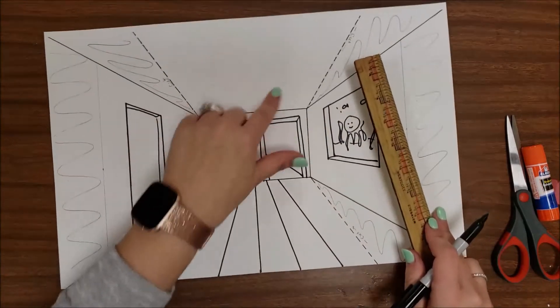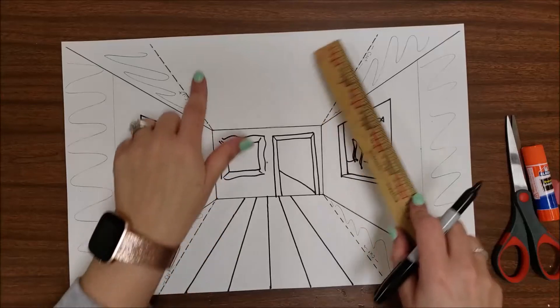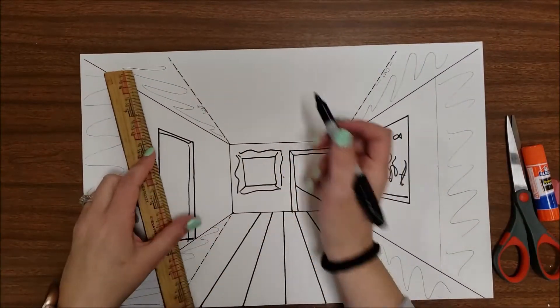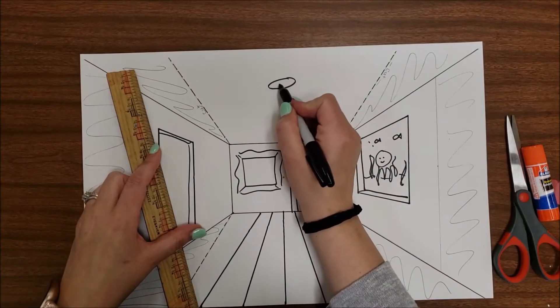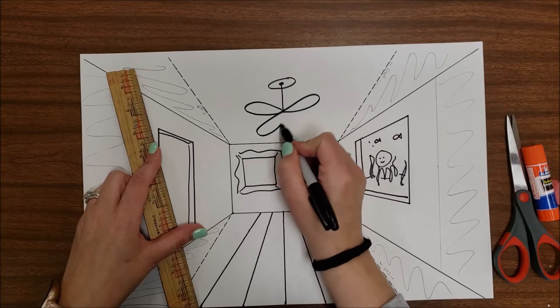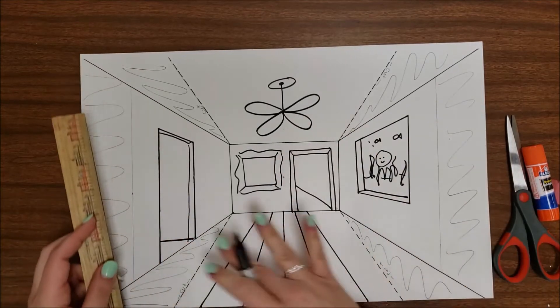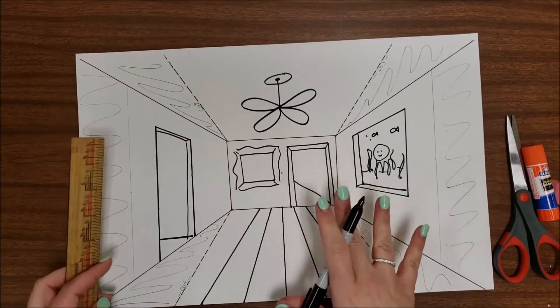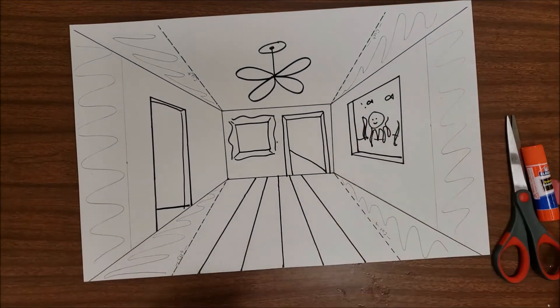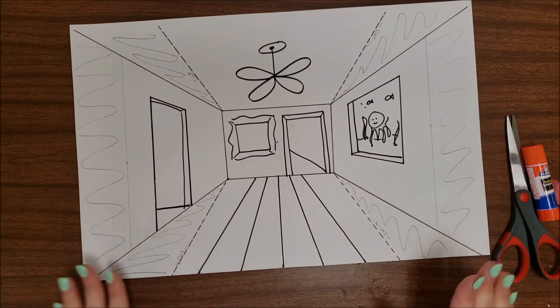For the ceiling, you could decide what's coming down. Maybe there's a big skylight open to the sky or something coming down from the ceiling. For me, maybe I'll just do a ceiling fan. Now you're going to want to spend a lot of time and do a lot more detail on yours than I have done here. Make sure that it's fully colored before you begin to cut.